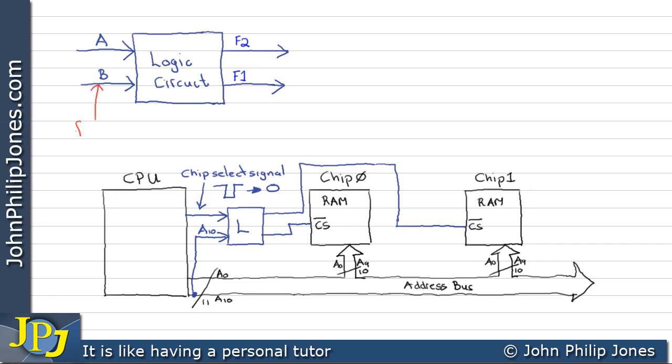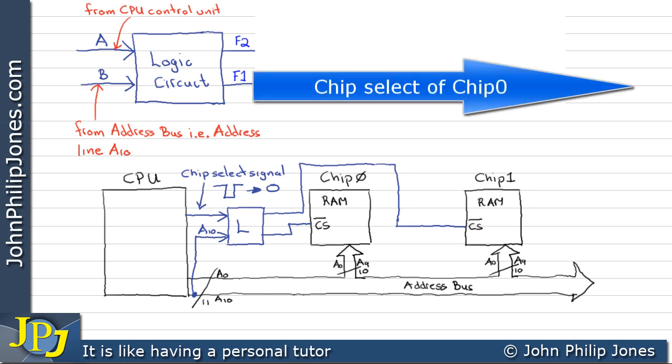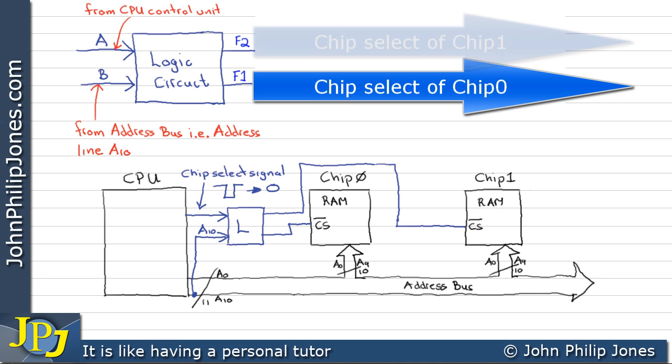If I have a look at input B, well this is the connection from the address bus. In fact, it is address line A10. A is taken from the CPU, which issues a control signal. F1, well that's an output being sent to the chip select of chip 0. F2 is being sent to the chip select of chip 1. And if we look at the diagram, you can see I'm labelling it with AB, F1 and F2.